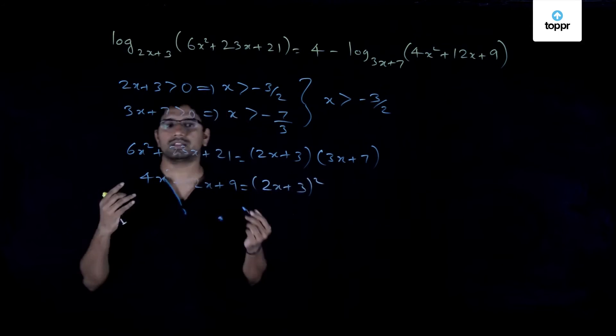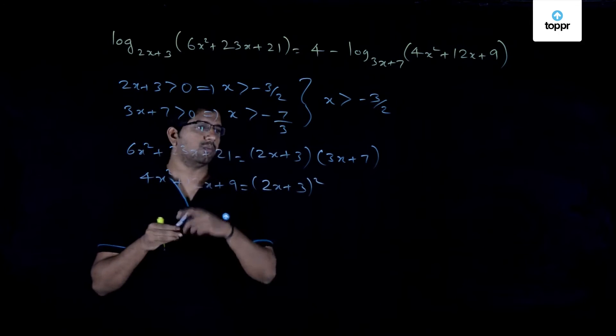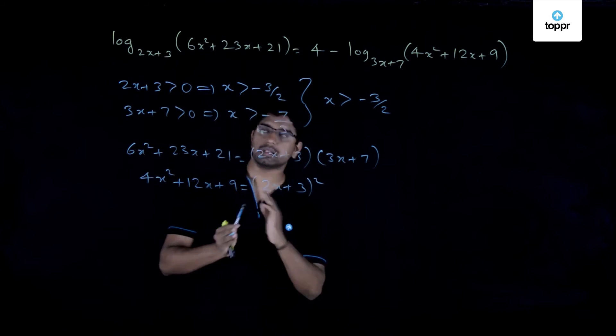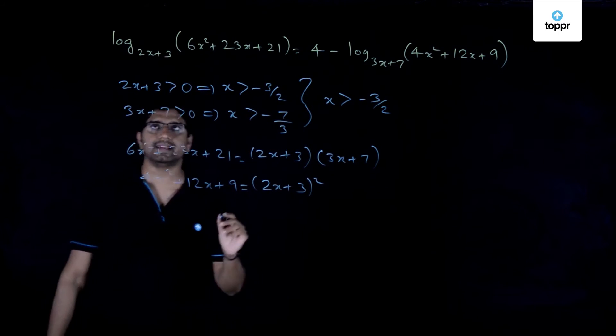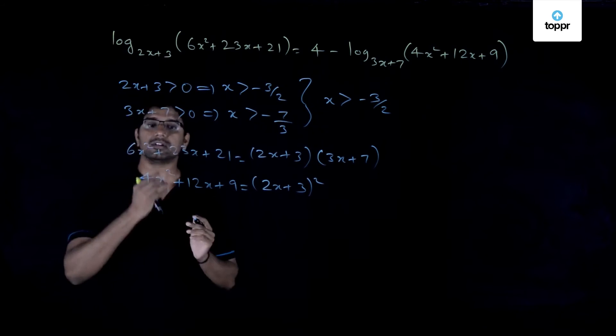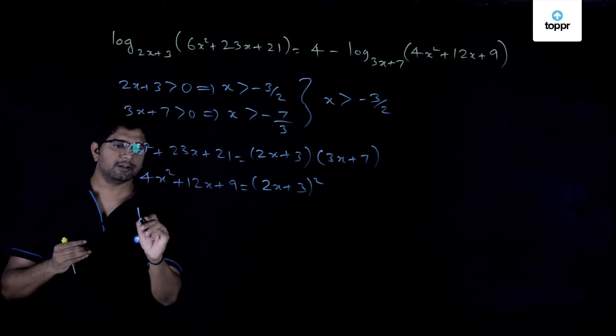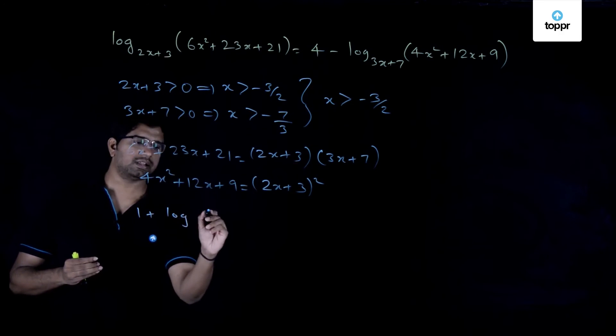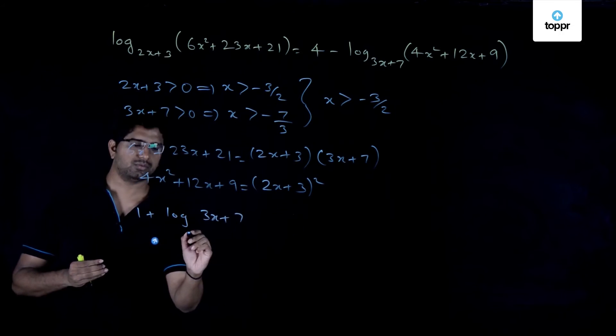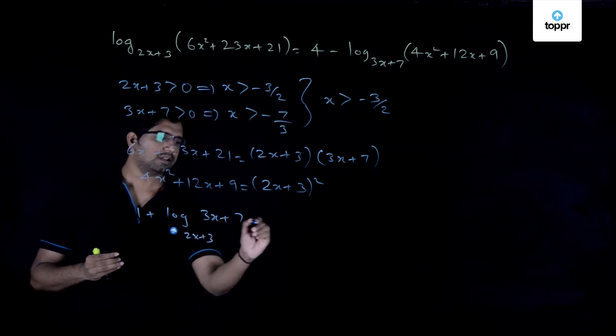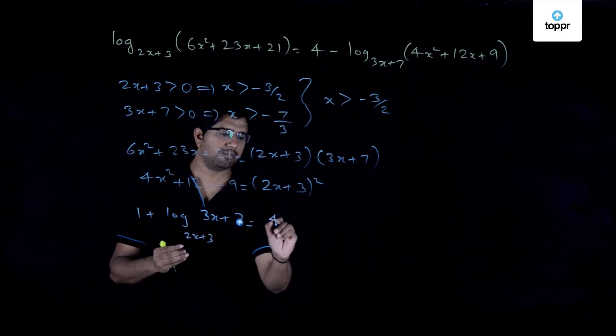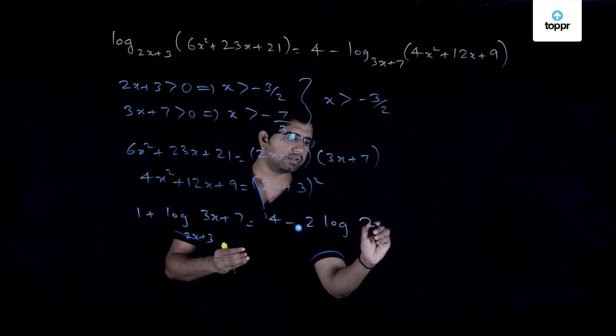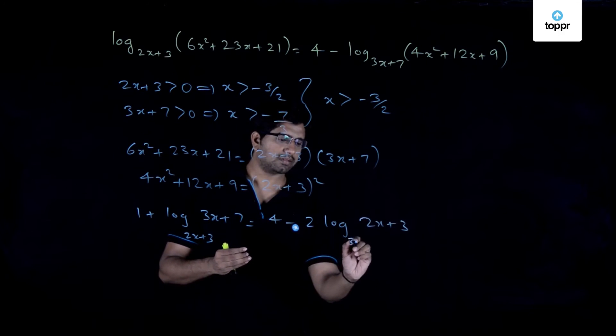So this is the important lead to this problem. Once we have this, the complicated looking logarithmic equation simplifies and one can write immediately that, making use of the property of logarithms: 1 + log(3x+7) to the base (2x+3) is equal to 4 - 2·log(2x+3) to the base (3x+7).